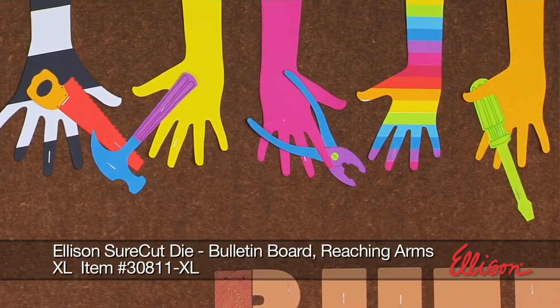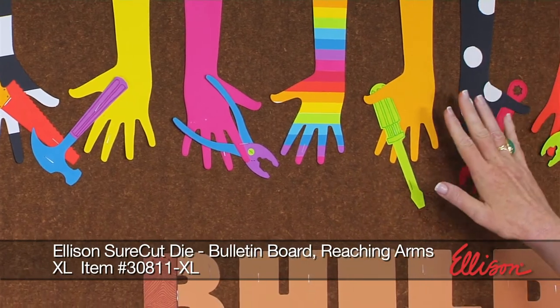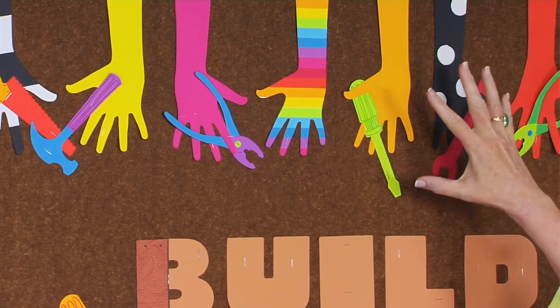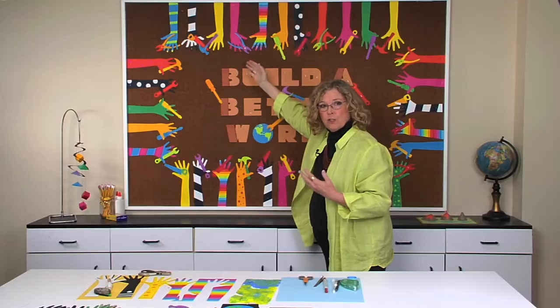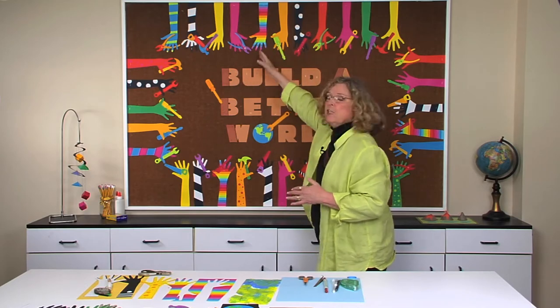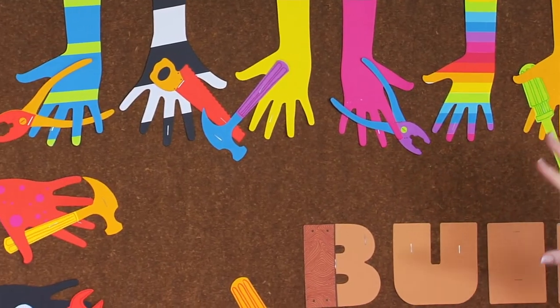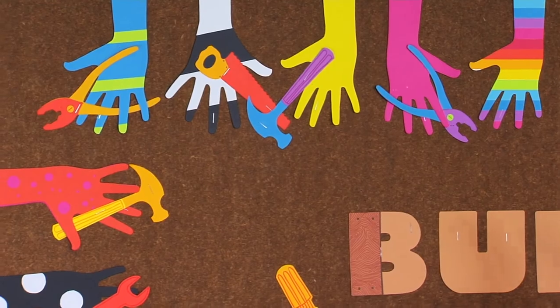Up above and on the sides and the bottom, you'll see I start with the reaching arm die, which has the arm and the hands. And all of your students are going to decorate, each one will decorate an arm so that each one of them will have something represented on the board.